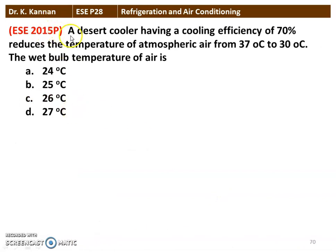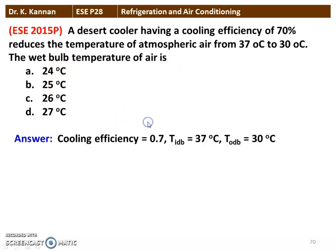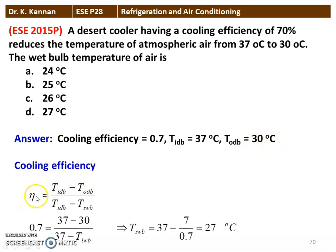Next question from the 2015 question paper: A desert cooler with cooling efficiency of 70% reduces air temperature from 37°C to 30°C. The wet-bulb temperature of the air is calculated using: η_c = (T_db,in − T_db,out) / (T_db,in − T_wb,in). So 0.7 = (37 − 30) / (37 − T_wb). Rearranging, the inlet wet-bulb temperature = 27°C. Option D is the correct answer.